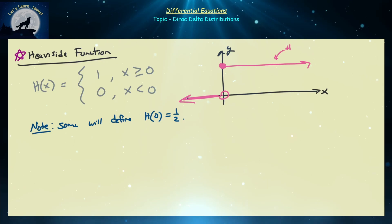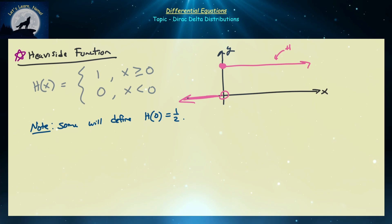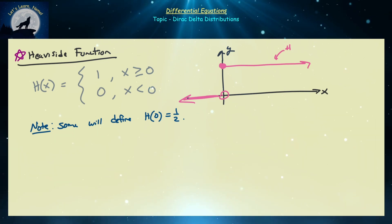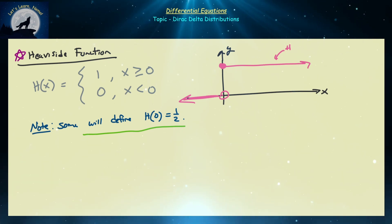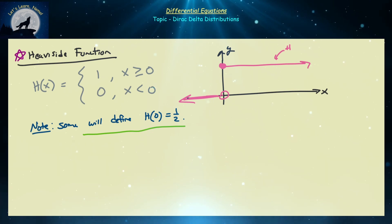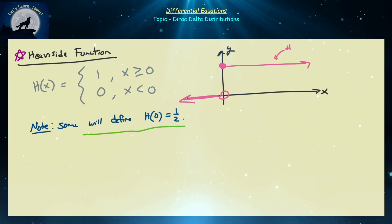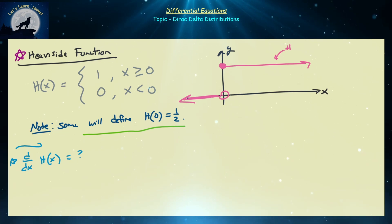The next function to introduce is the Heaviside function. It's a piecewise function: H(x) = 1 for x ≥ 0 and 0 for x < 0. Some people define it differently — one for x > 0, zero for x < 0, and one-half at x = 0 — but this won't affect the results. A natural question: since this is constant almost everywhere, what is the derivative of the Heaviside function?